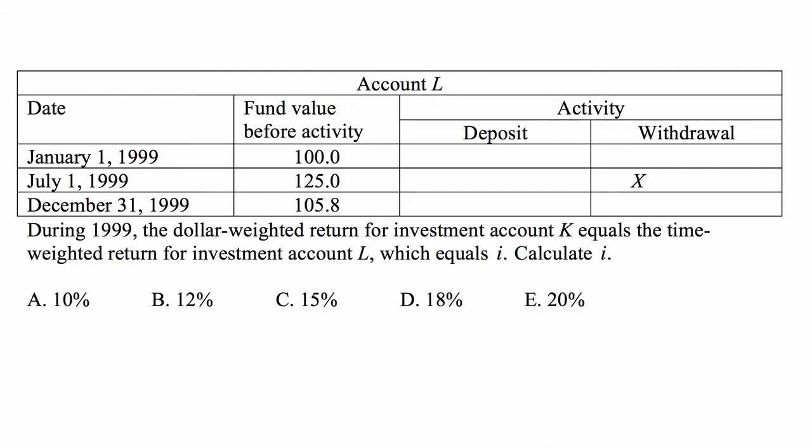We are told that during 1999 the dollar-weighted return for investment account K equals the time-weighted return for investment account L, which equals I. Calculate that I.